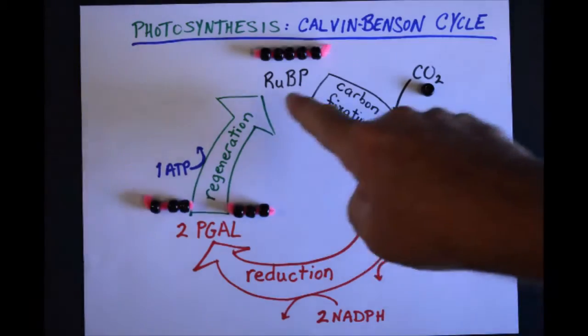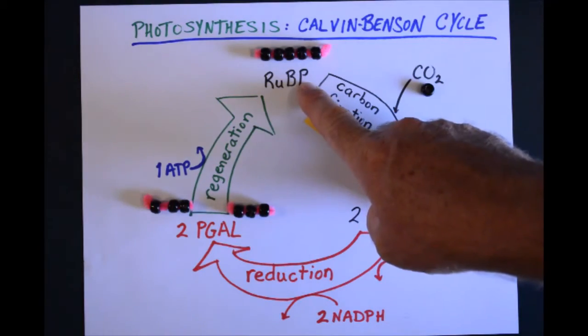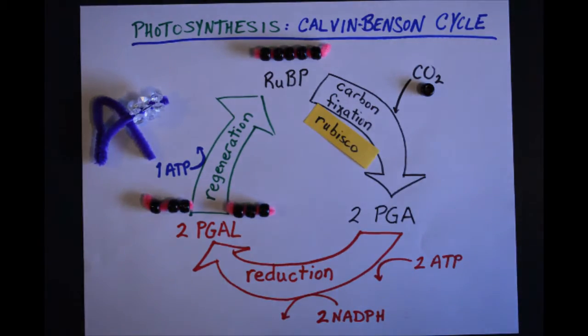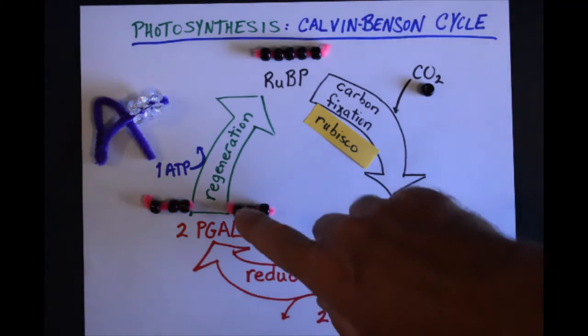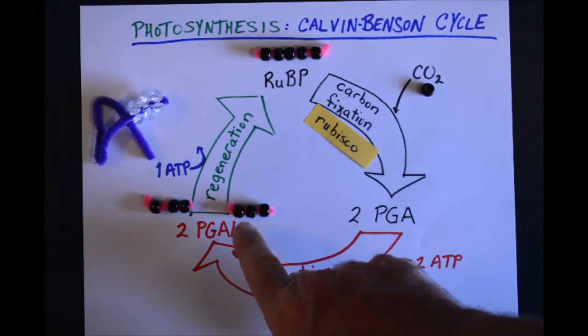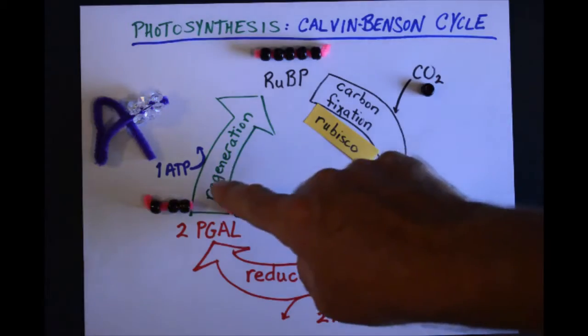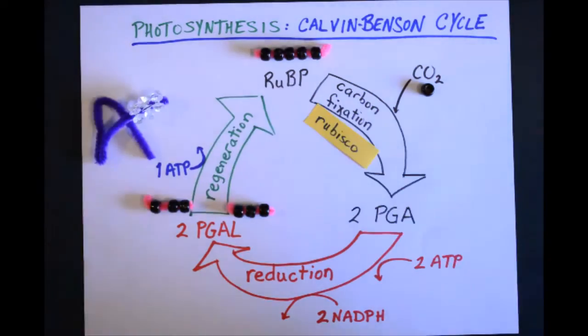The last stage in this reaction is we need to get back up to the beginning and make another ribulose bisphosphate. We're going to need some more energy for that in the form of ATP. And in a rather complex series of reactions involving the input of energy and several of these PGAL molecules, we will reform this ribulose bisphosphate.